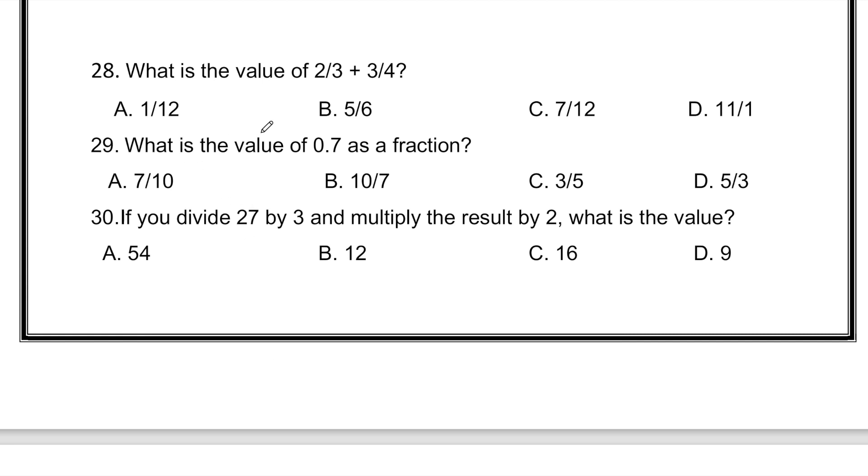What is the value of 2 by 3 plus 3 by 4? So first to do this, we will have to convert these fractions into like fractions, meaning both of the denominators should be the same. Firstly we know that 4 cannot come in 3's table, that's why we have to choose a number that comes in both of the tables, meaning 12. 12 comes in both of the tables.